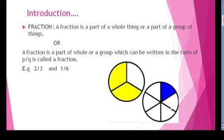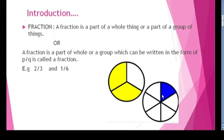Now I have a second example. Here I have a circle divided into six parts — one, two, three, four, five, six. I have shaded three parts, giving us 3 by 6.